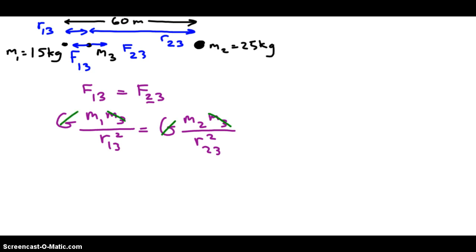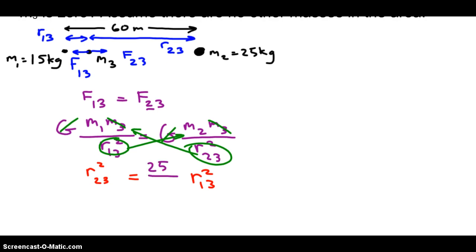The g's cancel out. The m3's cancel out. I'm going to bring r13 squared over to the right side and r23 squared to the left. And I have r23 squared equals m2 over m1. I know those values, right? m2 is 25, m1 is 15. I'm going to square root both sides. r13 squared can come out of the radical, and when it does it becomes a plain old r13. r23 and radical 25 over 15 is 1.29.